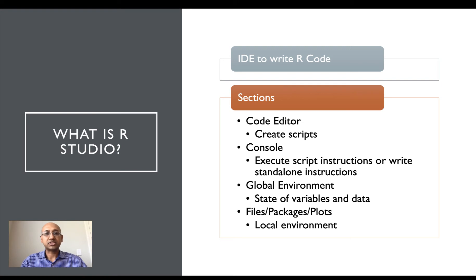There are specific sections to R Studio. These sections include the code editor, which is a space within the R Studio environment where one creates R scripts. Another section is the console, which is the environment that allows us to execute script instructions or write standalone instructions as needed. We also have a global environment within R Studio, which allows us to examine the state of data and variables in our R script.